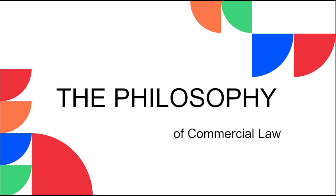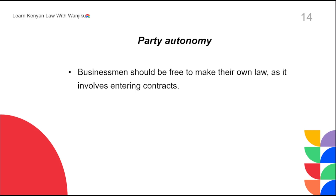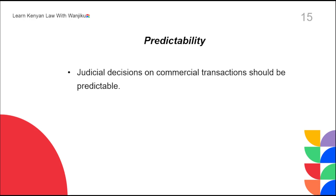What is the philosophy of commercial law? One philosophy is party autonomy — businessmen should be free to make their own law as it involves entering into contracts. As a business person, you are free to come up with any rights and obligations to govern your transactions, as long as the parties signed the contract freely. The next philosophy is predictability — judicial decisions on commercial transactions should be predictable so that business people know where they stand.